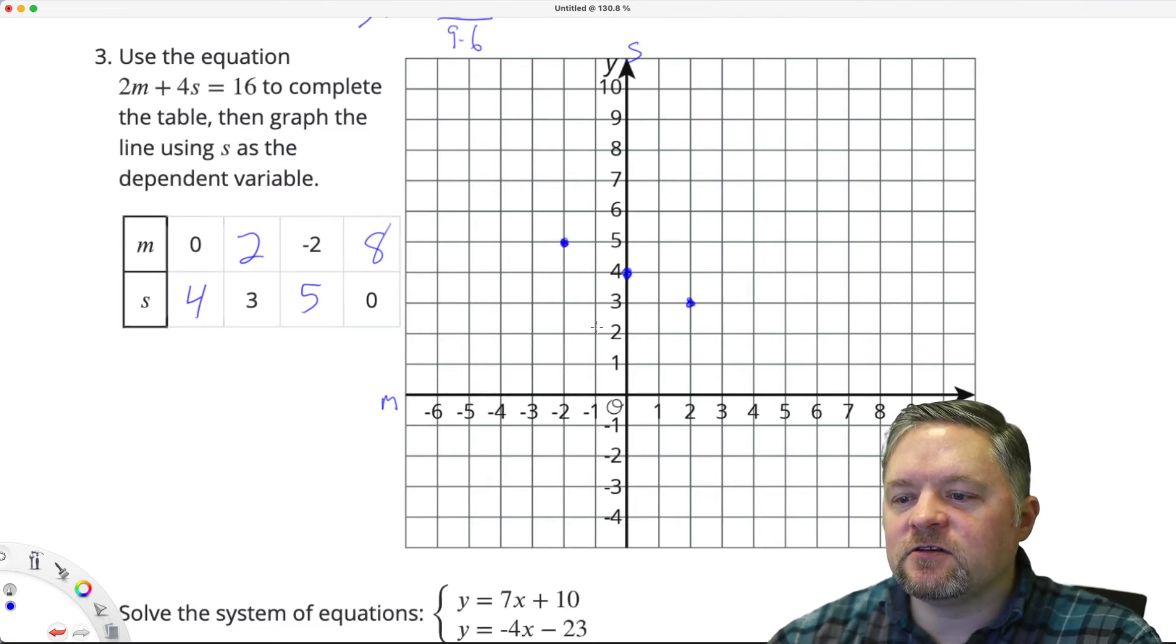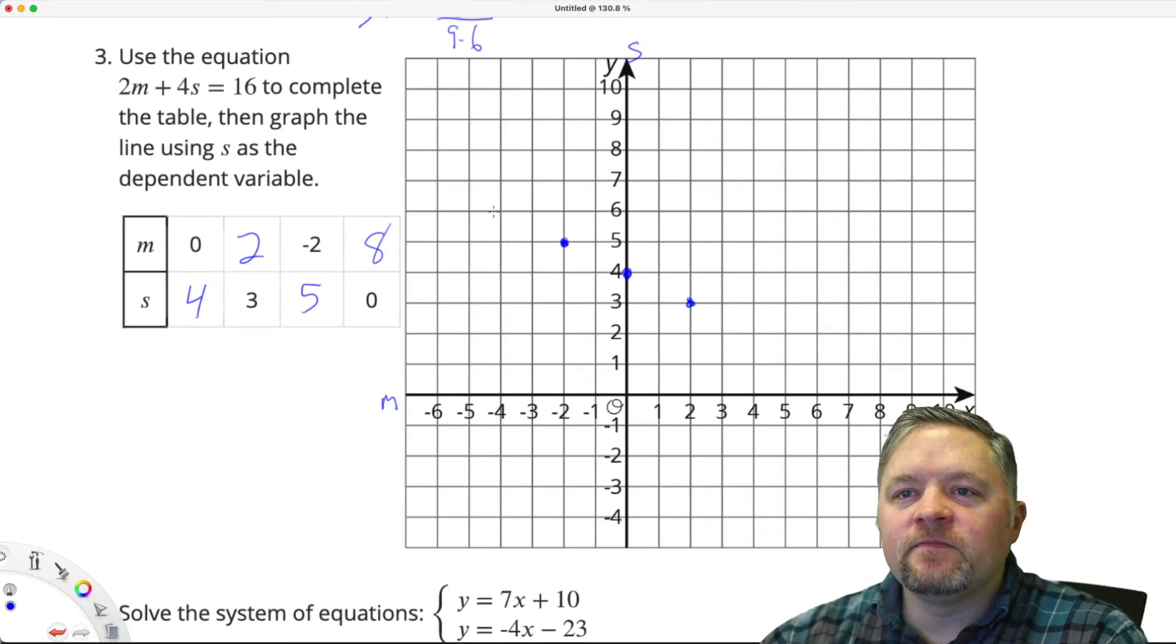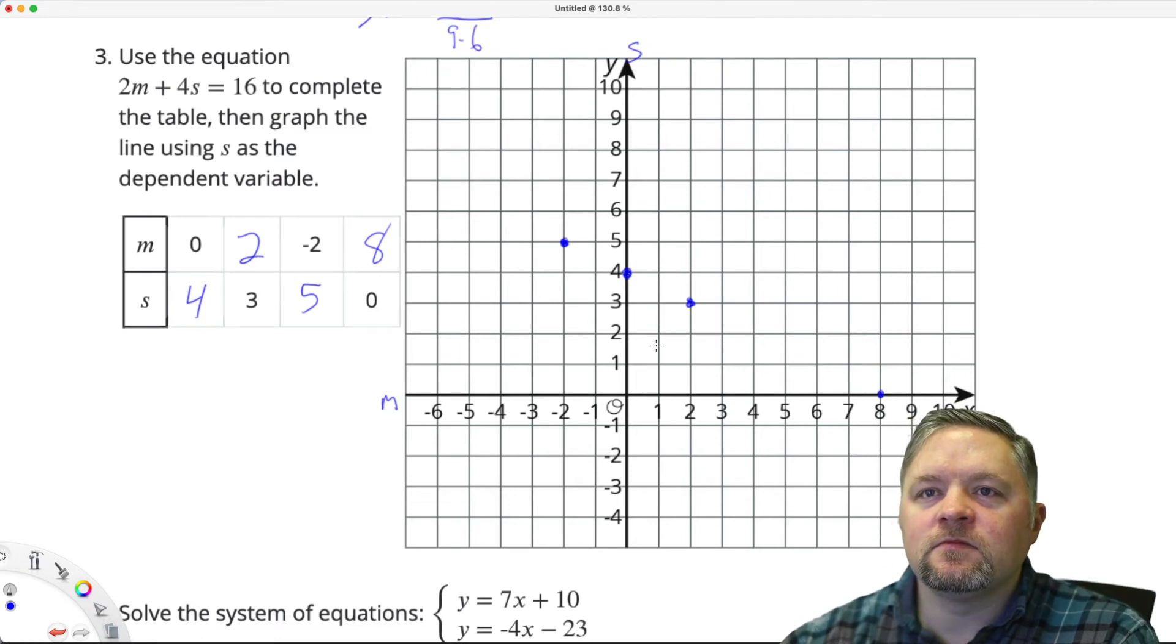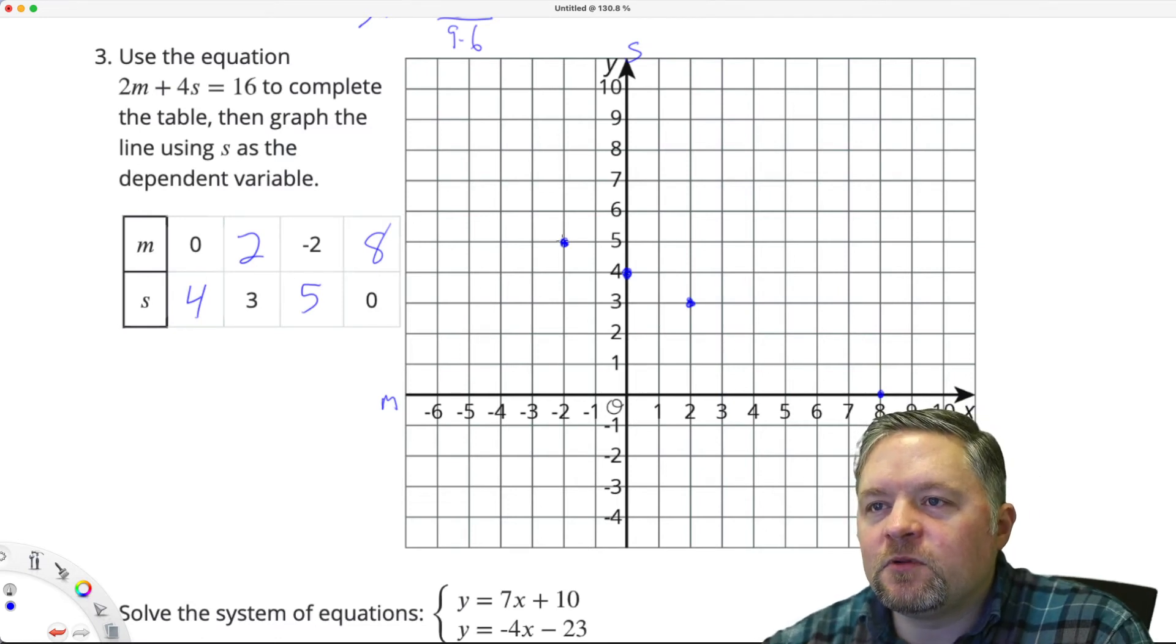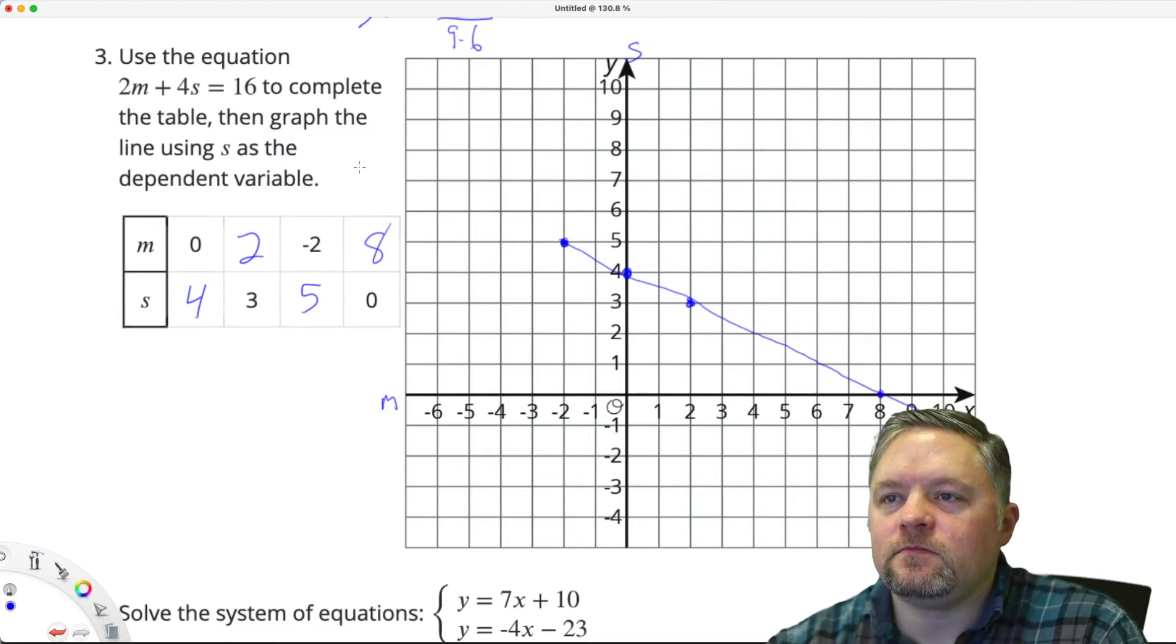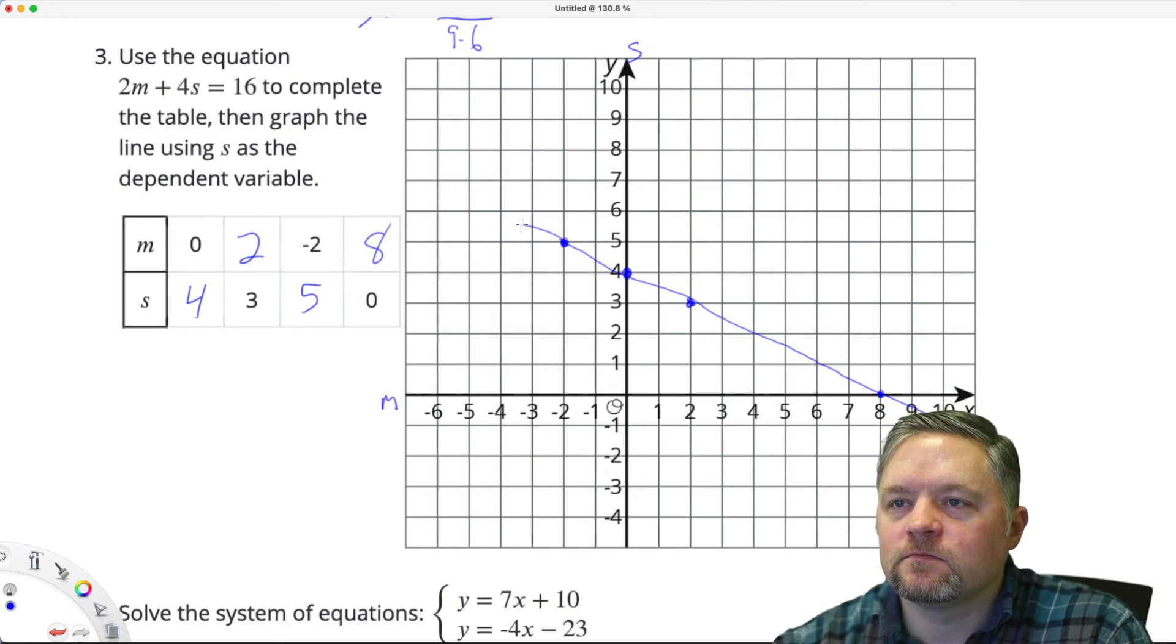Ooh, this is starting to look pretty linear. If M is 8, S is 0. So, if we want to plot this graph, connect all the points that we've got. There.